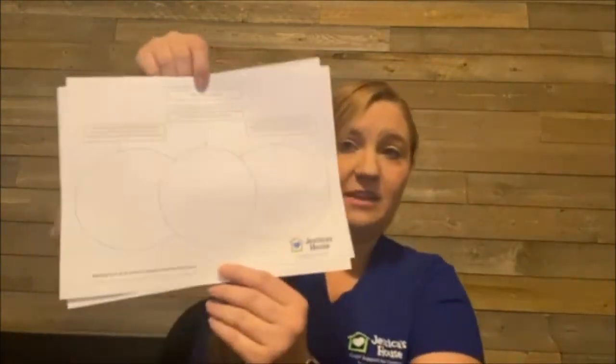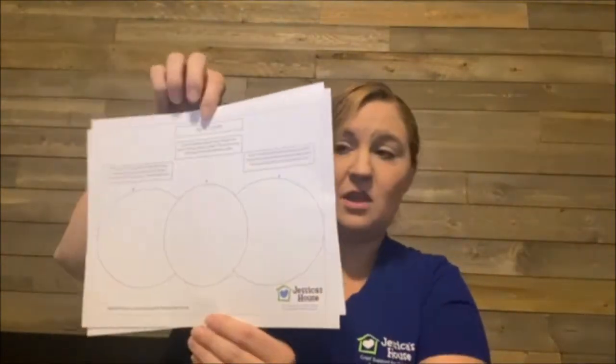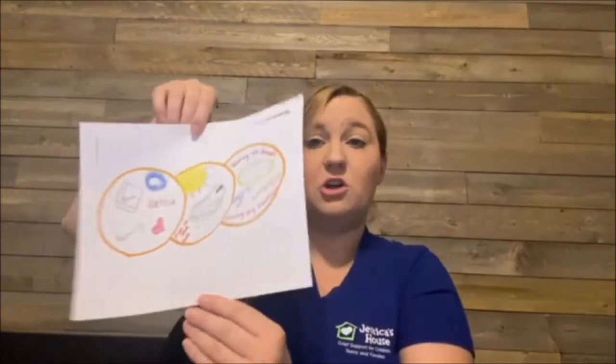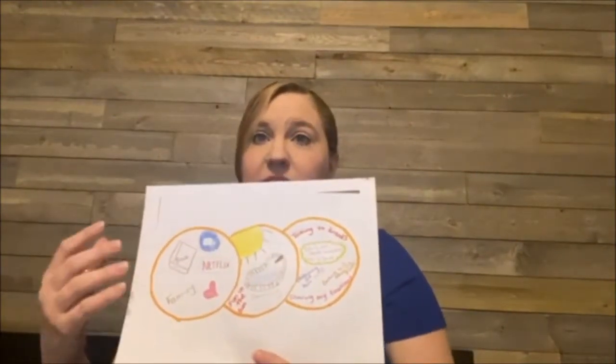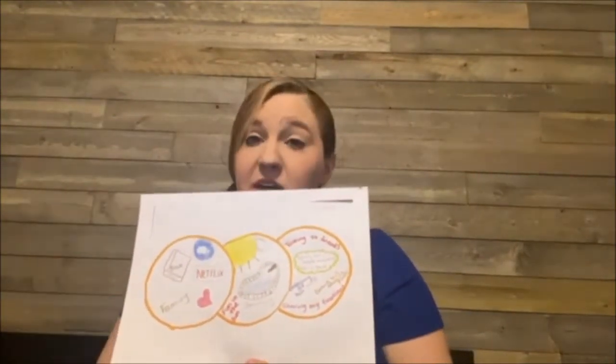Thank you, Brad. This week's activity is called My Three Circles. For this week's activity, all you need is something to draw with — crayons, colored pencils, markers — and either the template that we've provided or just a blank piece of paper that you can draw your own circles on.